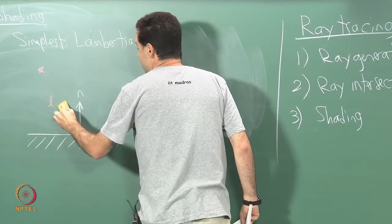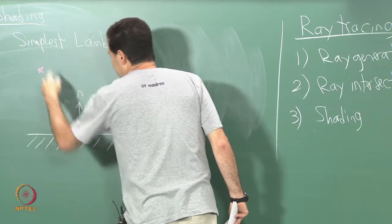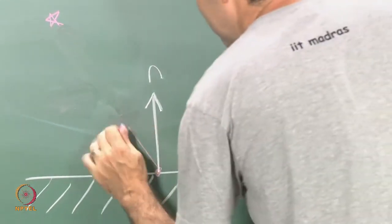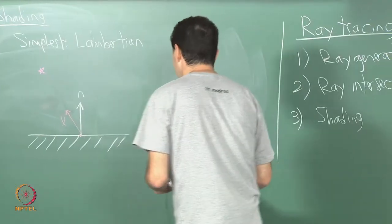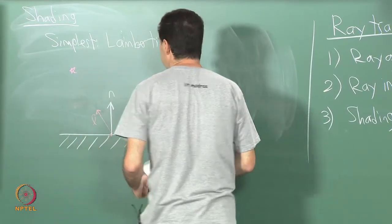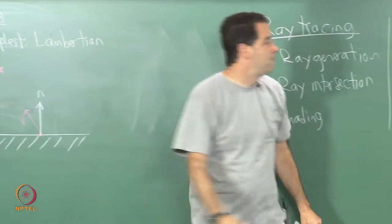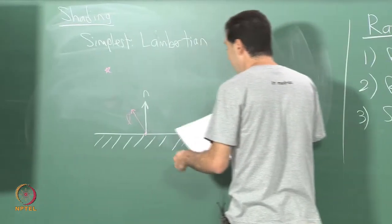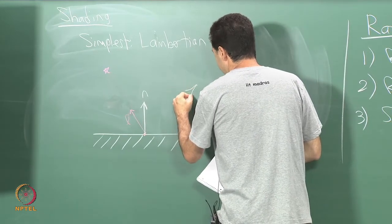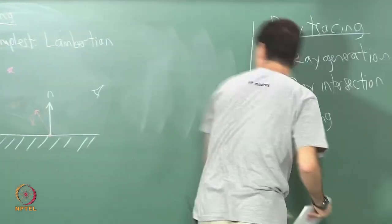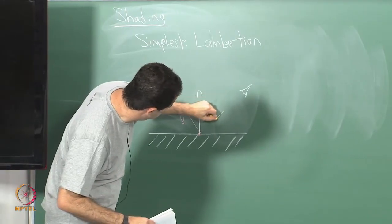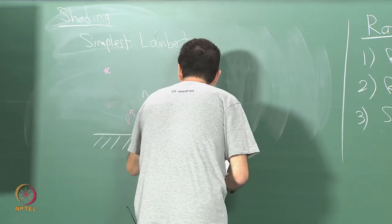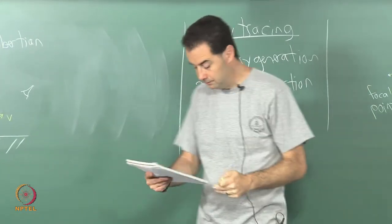Let me shorten this L vector so we deal with unit vectors — I do not want it to go all the way to the light source. Those vectors should appear to be the same length. And then there is the direction that you are looking at the surface from — this would be the direction of the ray as it hits the surface, the direction of the virtual eye looking at the surface. I will call this V for viewing direction.